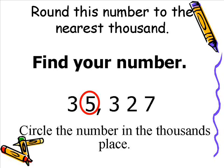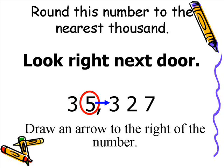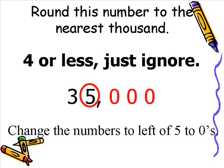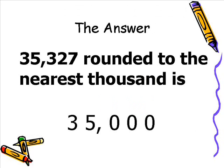The next line of the point says look right next door. We're going to draw an arrow from the number we're rounding to the right. You can see there's a 3 to the right of the 5, according to the arrow. Now the next line says 4 or less, just ignore. Since 3 is less than 4, we do not change the 5 — we leave it alone. We change all the numbers to the right of the 5 to 0s. So 35,327 rounded to the nearest 1,000 is 35,000.